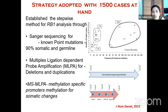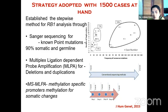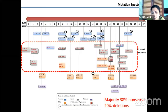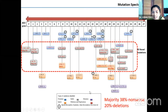We had about 1500 cases and established a stepwise method for RB1 analysis through Sanger sequencing for known point mutations — 90% being somatic and germline. We then did MLPA for deletions and duplications and MS-MLPA for somatic changes. Next generation sequencing helped us identify new pathogenic variants in RB1 which could not be identified by conventional methods. On plotting the spectrum, we found about 20 novel mutations very specific to our part of the country. About 38% were nonsense mutations, along with indels, missense, splice, deletions, and duplications.